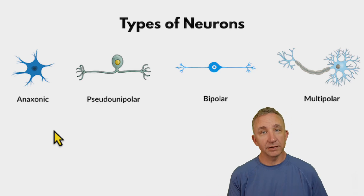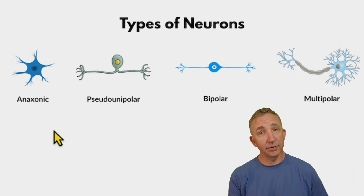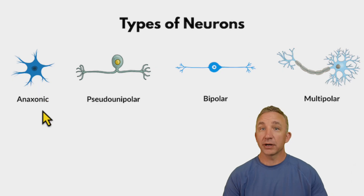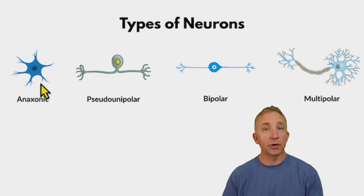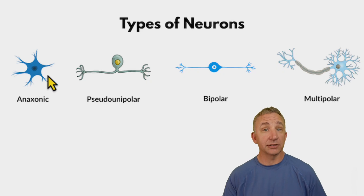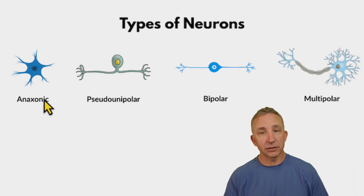The body, when we look at the nervous system, tends to do three things: it senses things, it interprets, and then it reacts. When we look at anaxonal neurons, some texts will say we're still not fully understanding how they function, but they tend to have more of a sensory function, which the structure makes sense for — because the structure creates the function. Having no axon, it has limited ability to move information. So that's anaxonal.